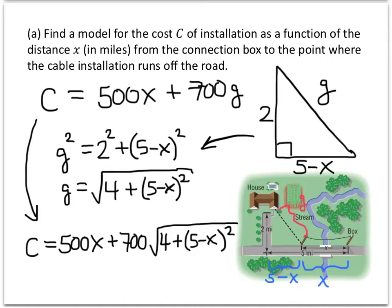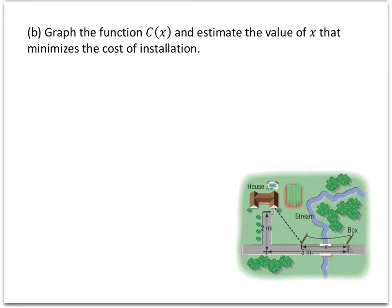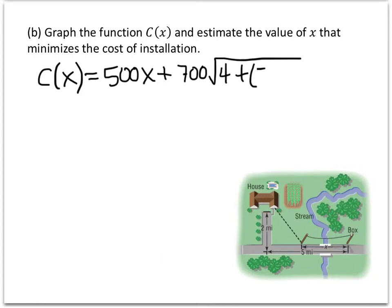Okay, there's a part b to this problem. Let's look at that. So now we want to graph this function and estimate the value of x that minimizes the cost of installation. So just to remind you, our model is that c of x is 500x plus 700 times the square root of a whole bunch of junk, 4 plus 5 minus x quantity squared. So what we're going to do is we're going to type that into our calculator and graph it. But again, before we think about how to graph that, an important step in that process is to think about what the x range should be.